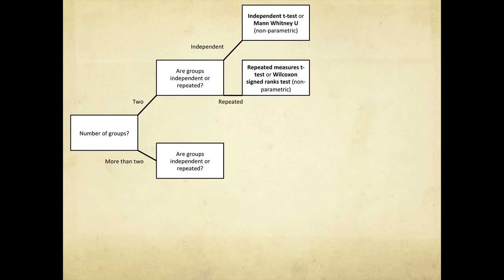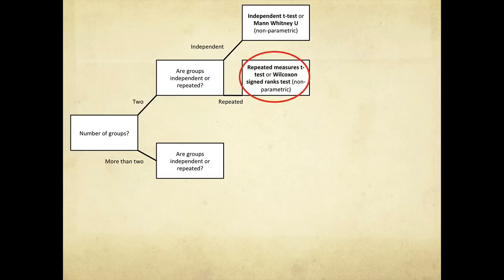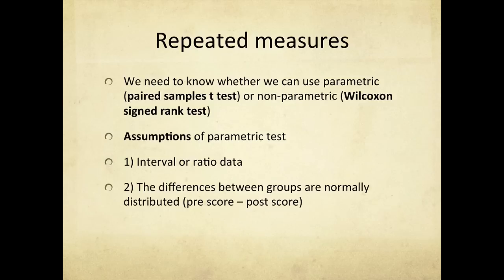For two groups that are repeated measures — measurements taken on the same group on two different occasions — we would use the repeated measures t-test, or the Wilcoxon signed-rank test, which is the non-parametric equivalent. Most of these tests have a parametric and then a non-parametric equivalent. For the paired samples t-test, the assumptions are interval or ratio data, but this time we want to know whether the differences between the pre and post scores are normally distributed. You would subtract score one from score two and do a histogram on those differences.